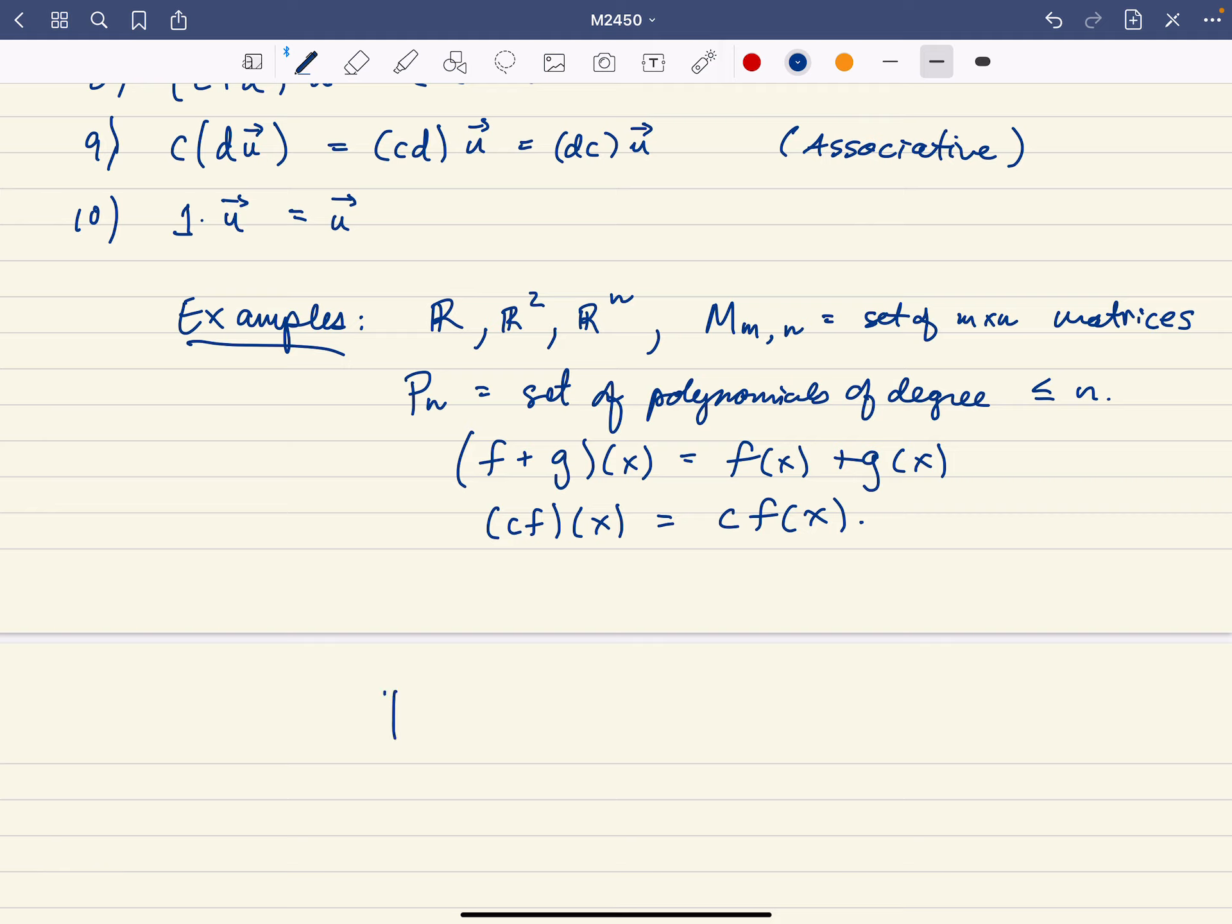There's others. For example, the set of all polynomials. So capital P is the set of all polynomials. You could also talk about the continuous functions, from negative infinity to infinity. So that's the set of all continuous functions that are defined over the entire real line.